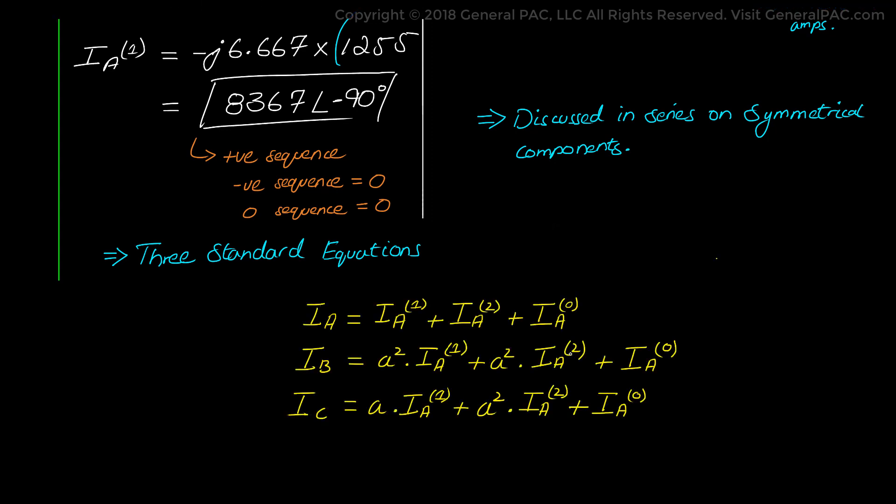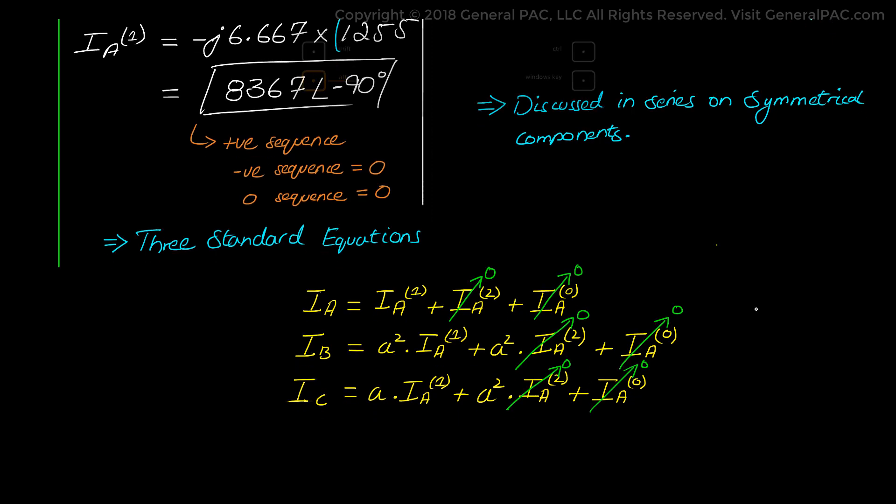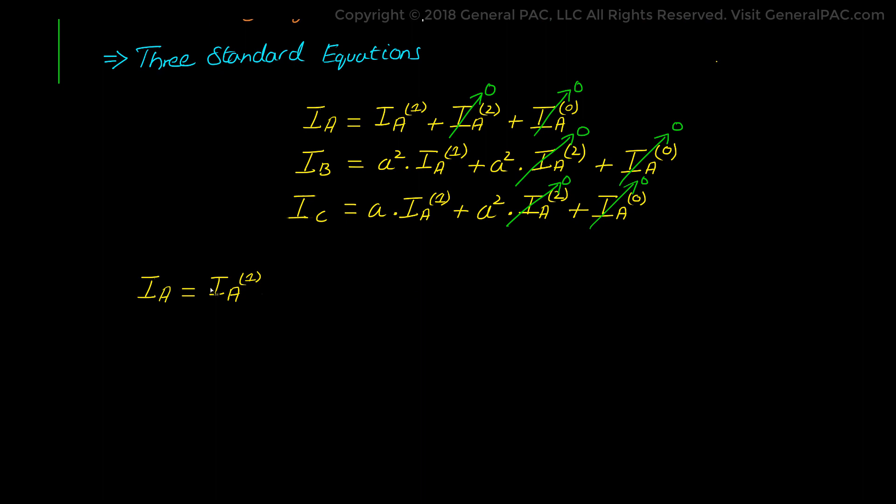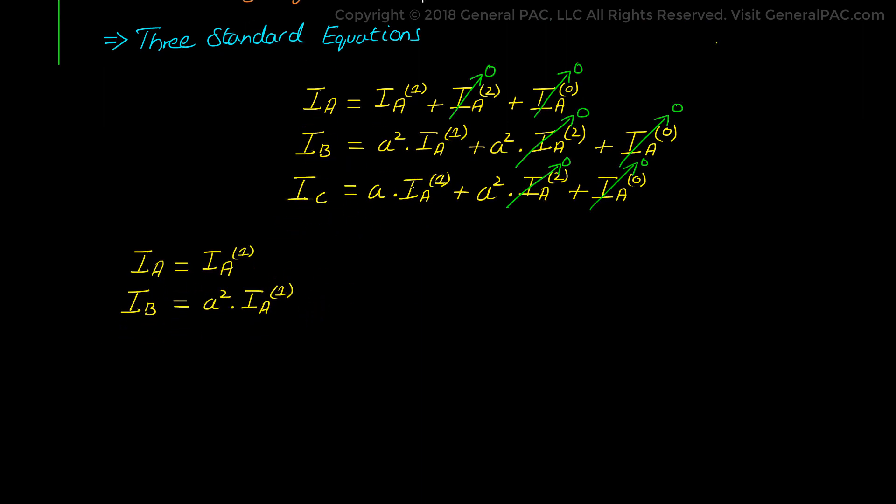Now we note here that the negative and zero sequence components are zero because it's a perfectly balanced 3 phase fault. So we simply eliminate those quantities. We can cross them out which simplifies our equations quite a bit for a 3 phase fault. And here we also have to note that the A operators equals the following.